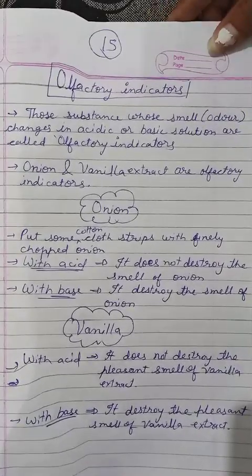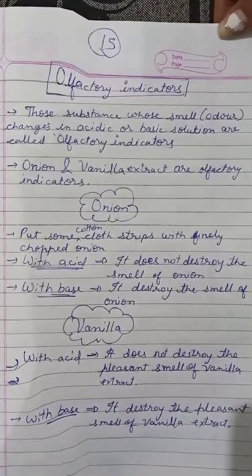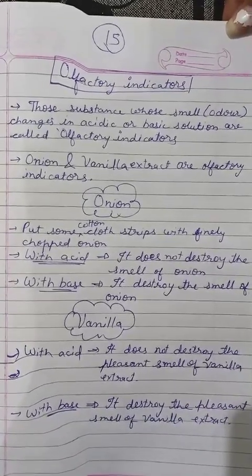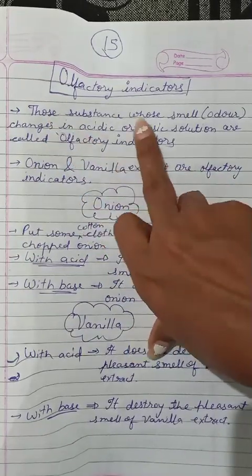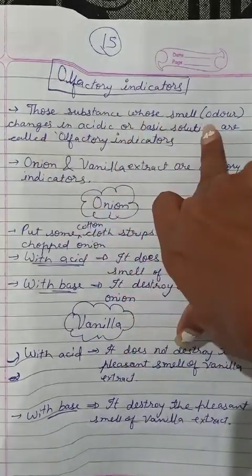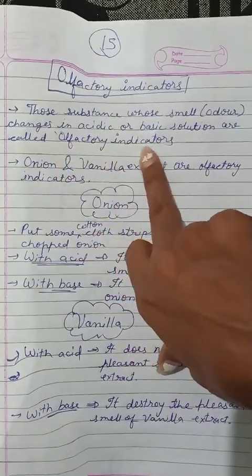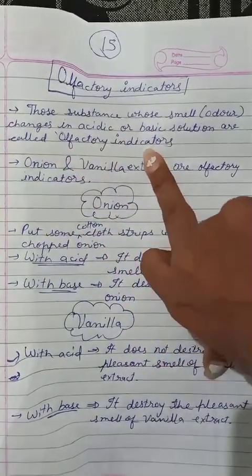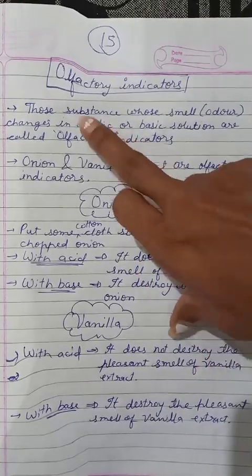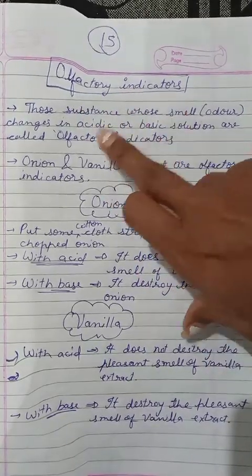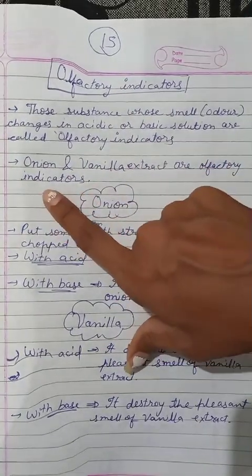The last type of indicator is the olfactory indicator. Olfactory is smell-related. Those substances whose smell or odor changes in acid and basic solution are called olfactory indicators. When their smell changes with acid or basic substances, we call them olfactory indicators. Onion and vanilla extract are olfactory indicators.